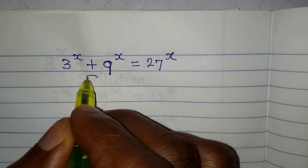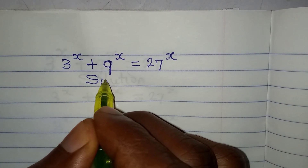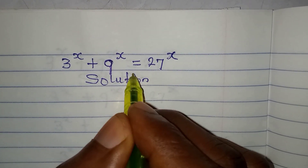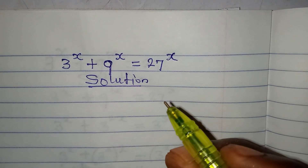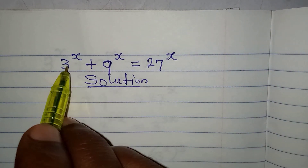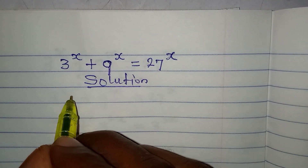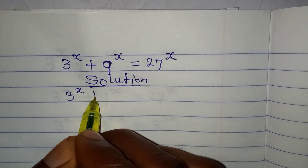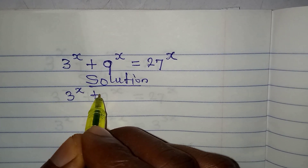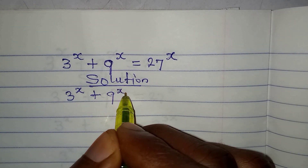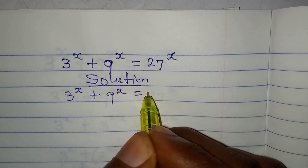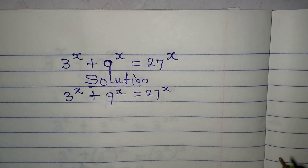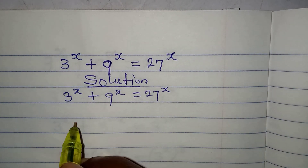Hello everyone, welcome to Foucault Mathematics. In this video we will provide the solution to this problem: 3 to the power of x plus 9 to the power of x equals 27 to the power of x.